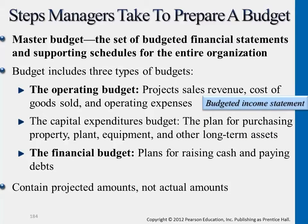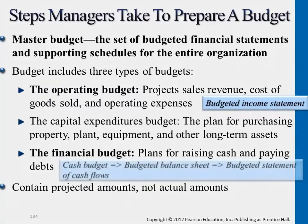Third, we have financial budget, which plans to raise cash and paying debts. Just by looking at the names of these different components of budget, does it remind you of any statements? Income statement links to the first one. Balance sheet links to the third one, but if you look at the breakdown of these three bullet points, it's actually exactly the same components as the statement of cash flows.